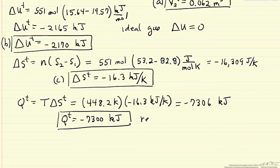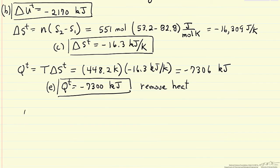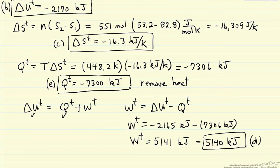Q is negative. This says, as we expect, we have to remove heat. We're doing work on the system when we compress it, but since we're keeping it isothermal, we have to remove heat to satisfy the first law. Delta u total equals q total plus w total. We know delta u and q, so w total is just delta u total minus q total. We might round this to 5100 kilojoules. Notice this is positive because we did work on the system in compressing it.